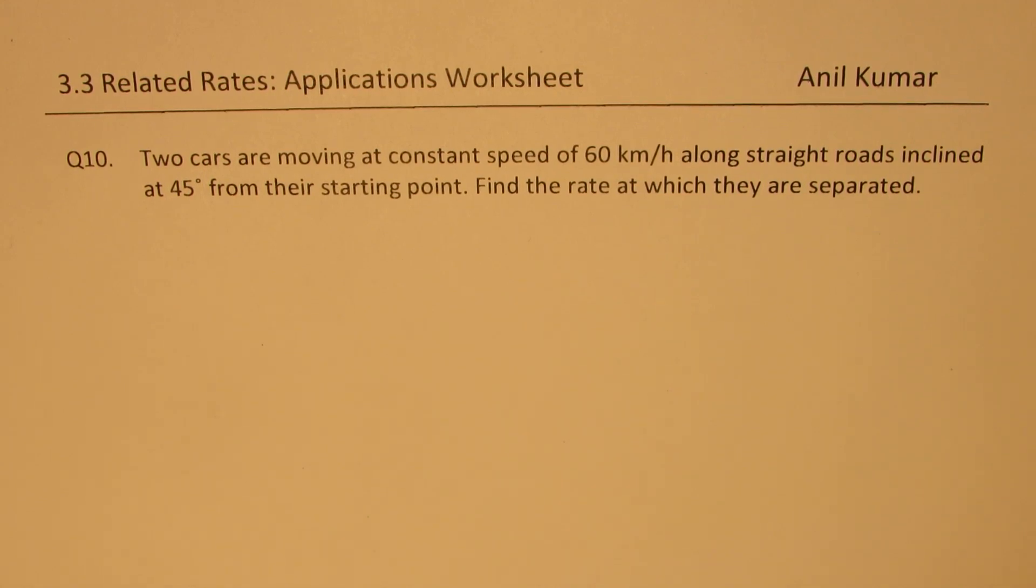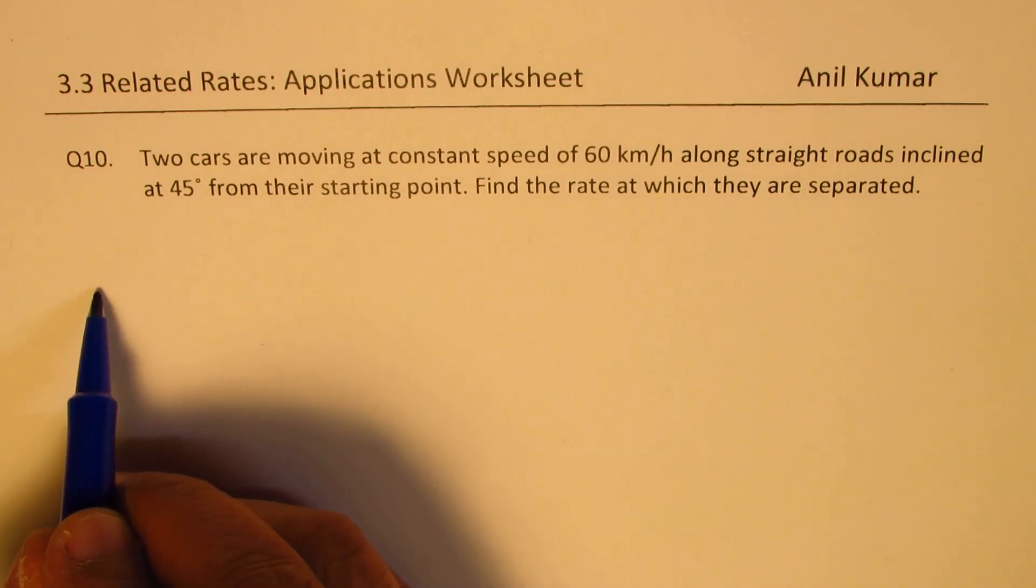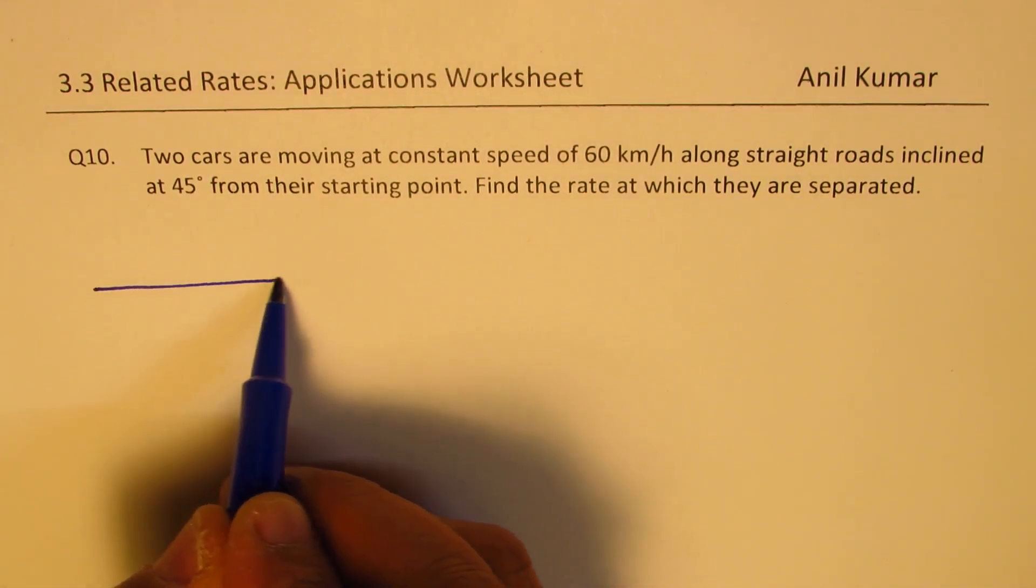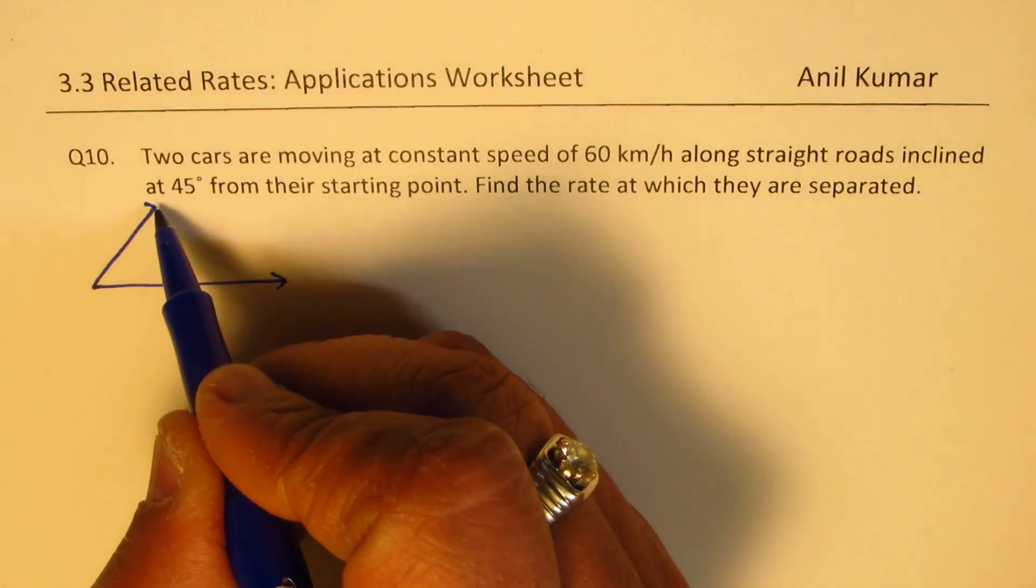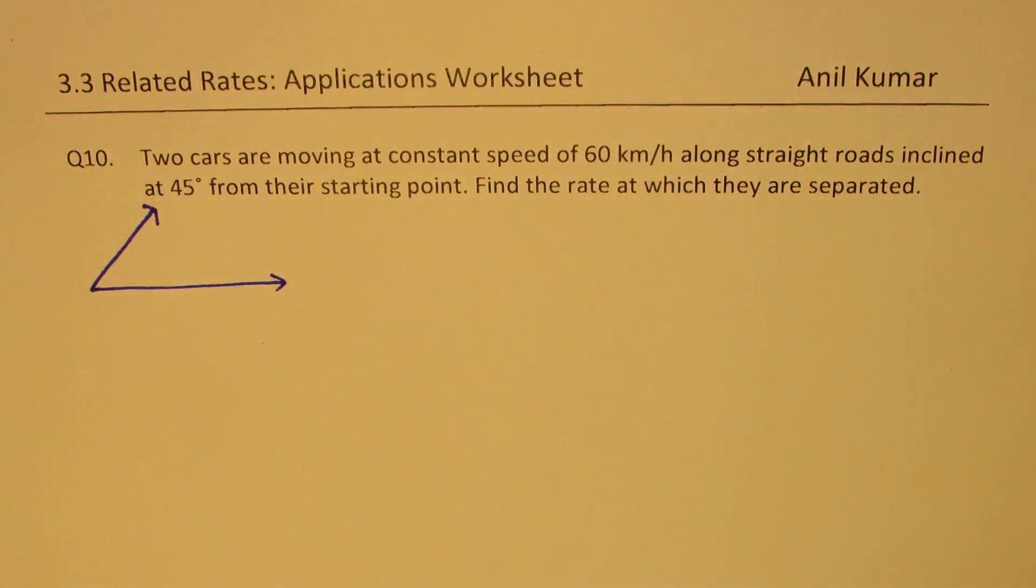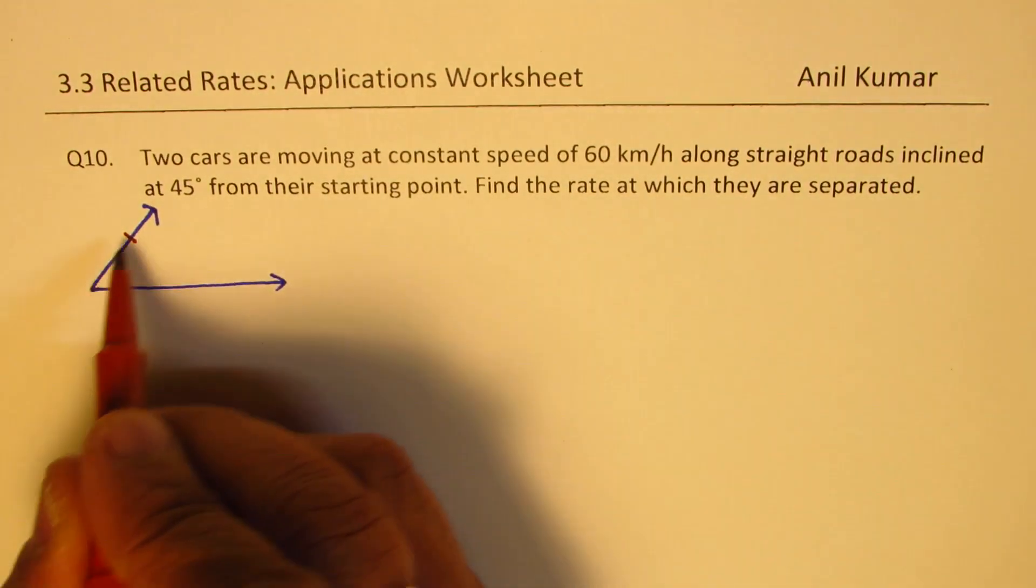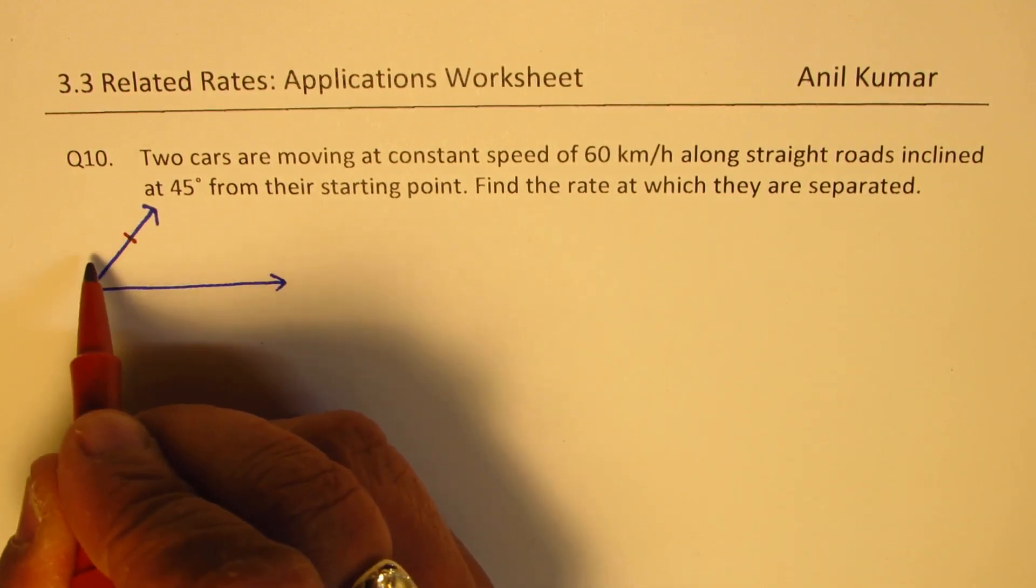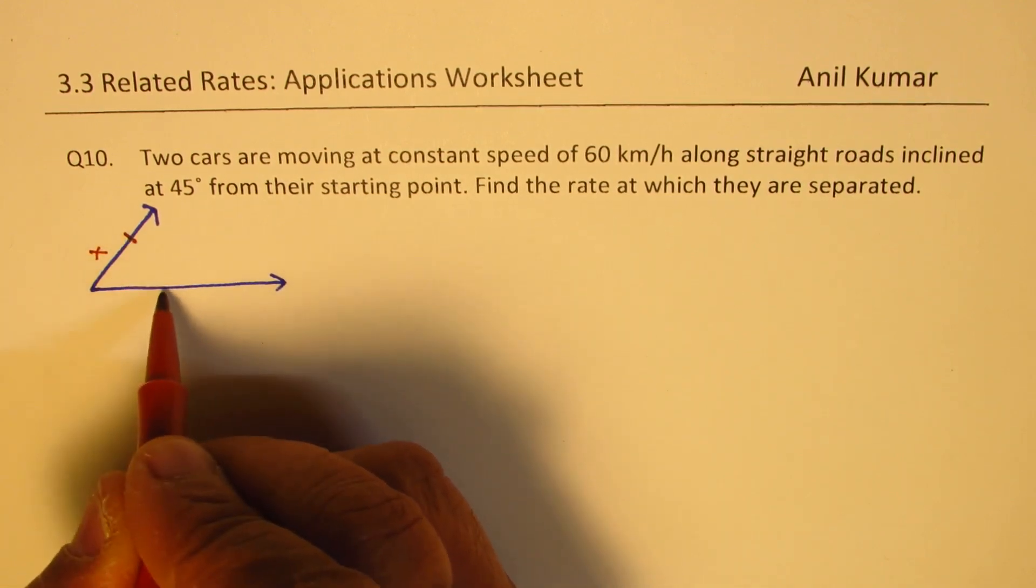Let's try to sketch the scenario and understand the position. There are from this point two cars, one is moving in this direction, the other one 45 degrees. Now they are moving at the same speed so with time they'll cover the same distance. So let's say one car reaches here at an instance of time, the other car will also reach as far but on the horizontally going road, so that is the position X.